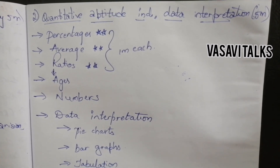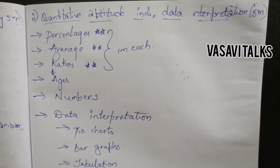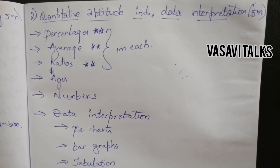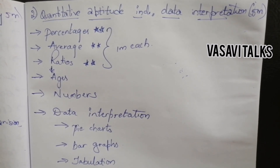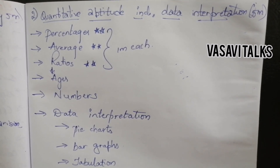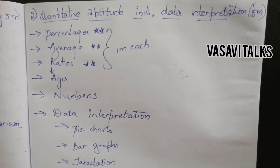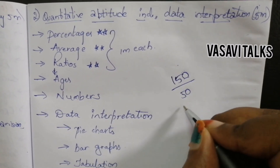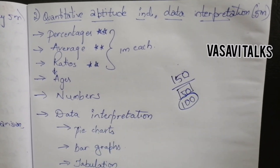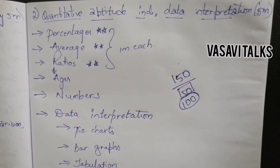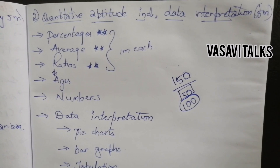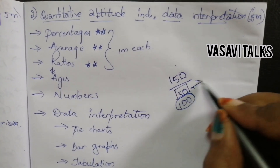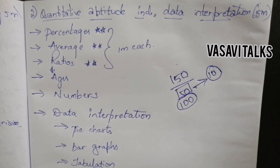The next topic is quantitative aptitude including data interpretation. In Part A there are 5 marks, so out of 50 marks, these two topics — general mental ability and reasoning, and quantitative aptitude — contribute 10 marks total, and they are easy to score.